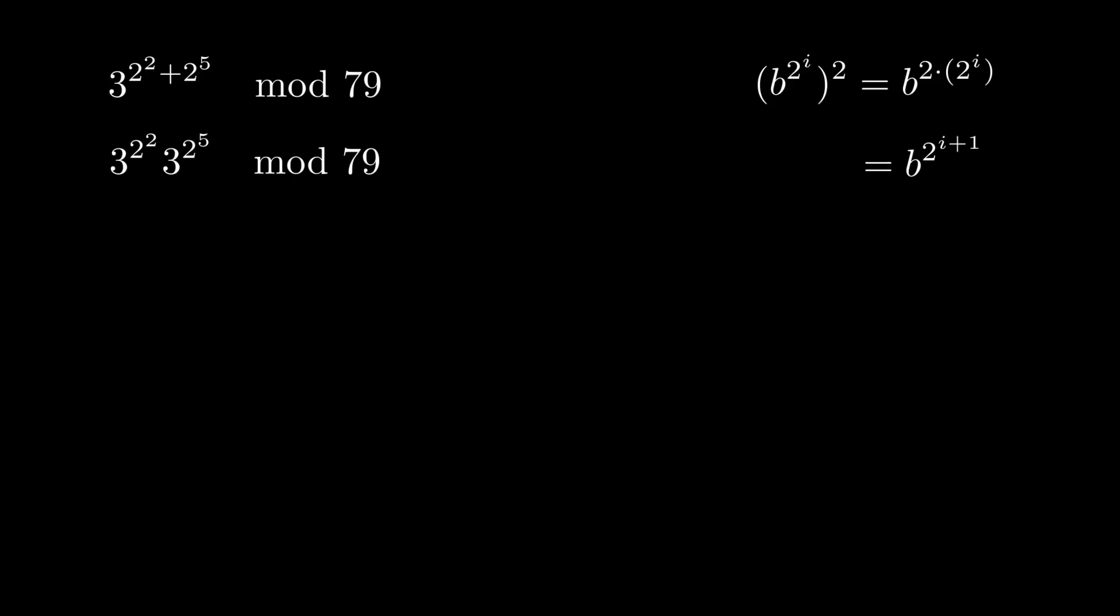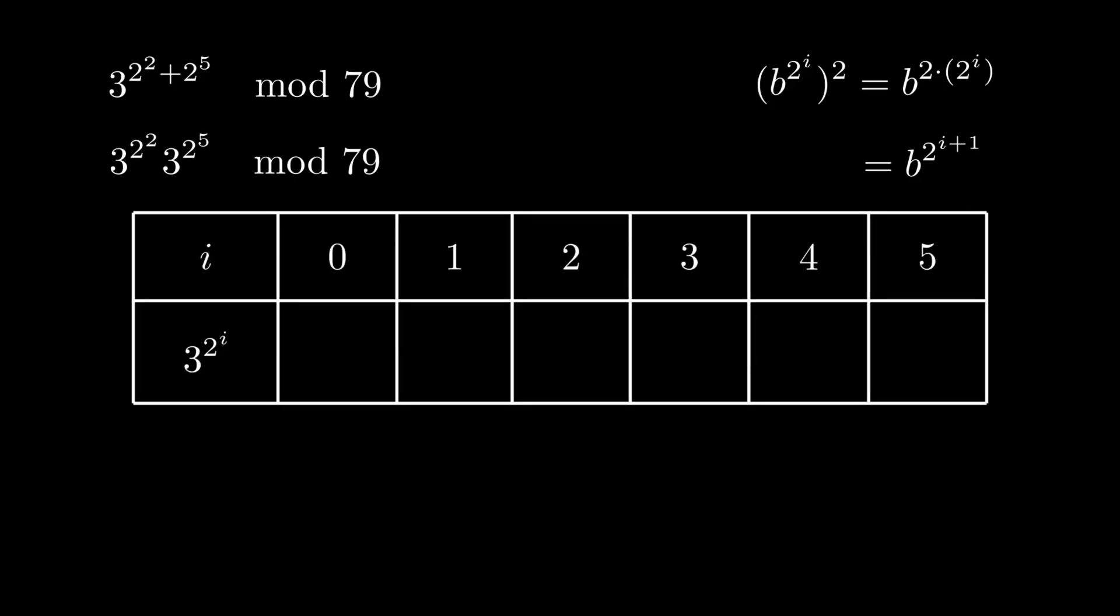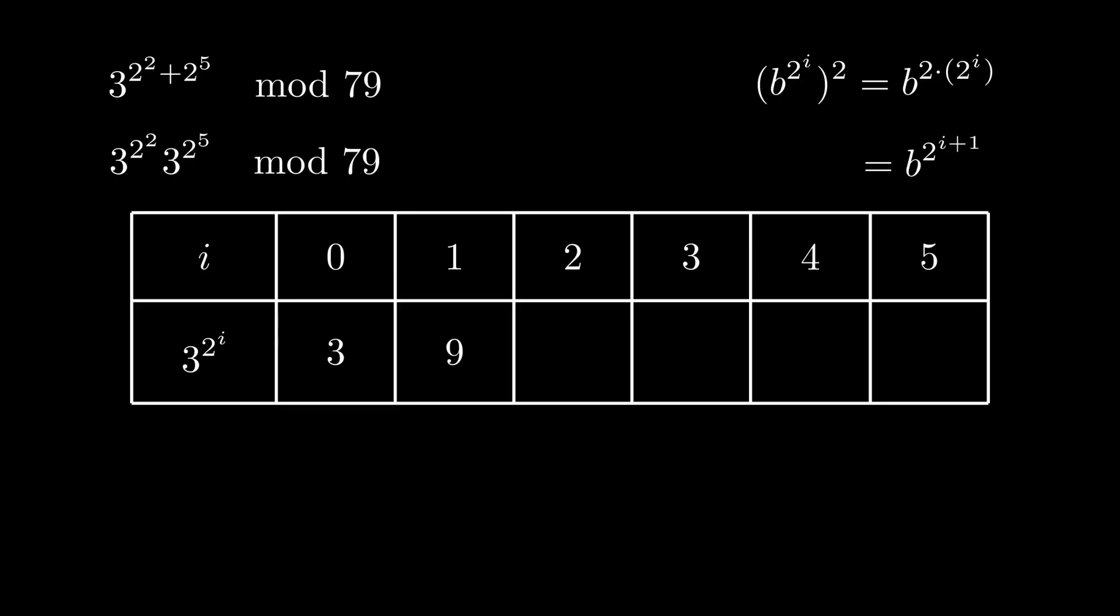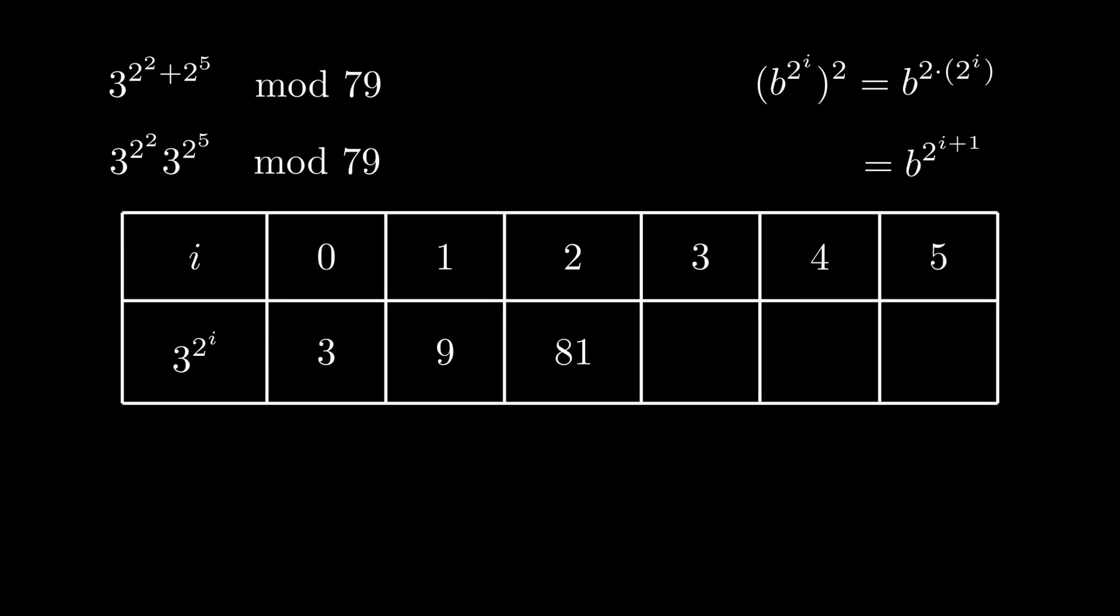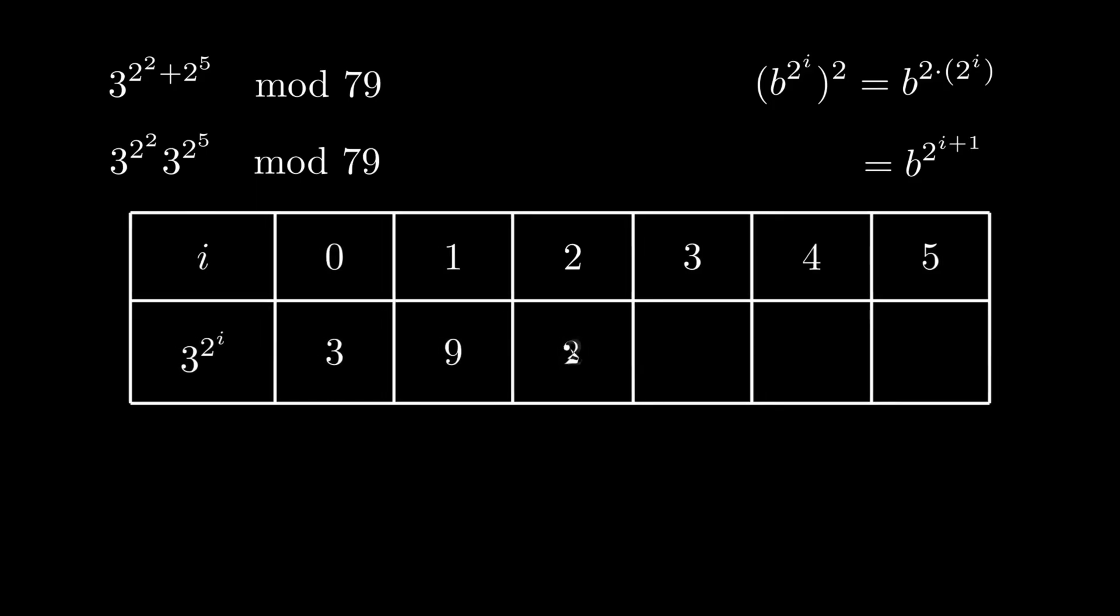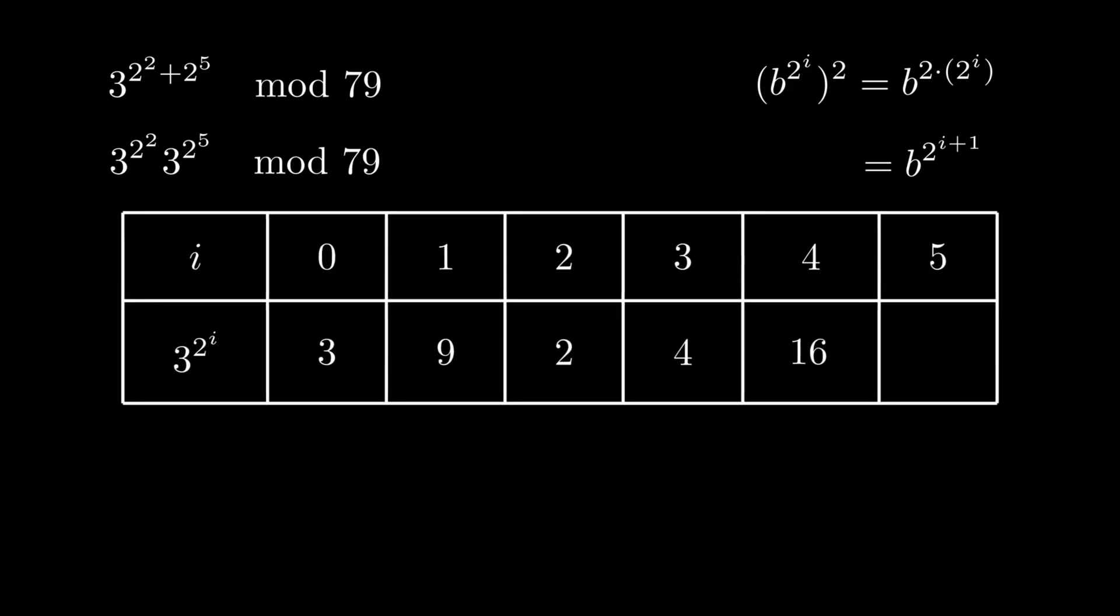Since we know that 3 to the 2 to the 0 is just 3, we can fill this table out very fast by repeated squaring of 3. We square 3 once to get 9, square 9 to get 81, and remember though, we're doing things mod 79, so we look at the remainder when we're dividing by 79, which is 2. We repeat this process, filling it in with 4, 16, and 19.